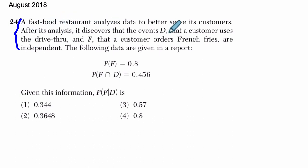A fast food restaurant analyzes data to better serve its customers. After its analysis, it discovers that the events D, so what is D? That is that a customer uses a drive-thru. Okay, that makes sense. D, drive-thru, got it. And F, that a customer orders French fries, so F is for French fries, are independent.